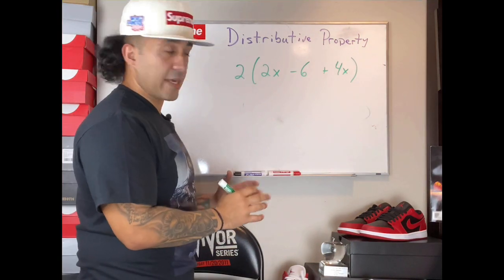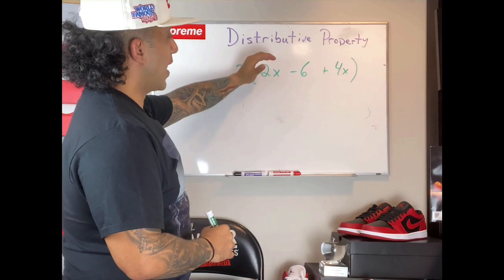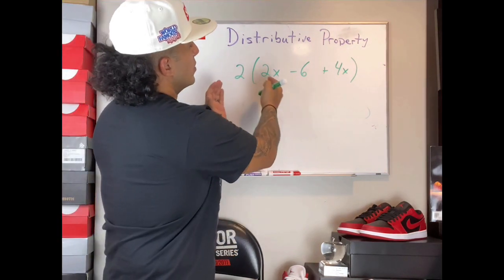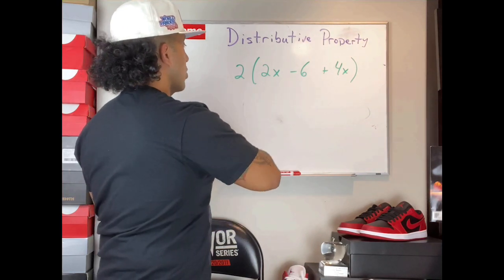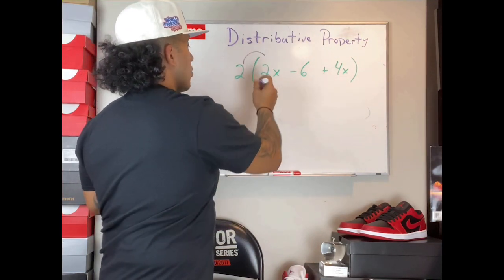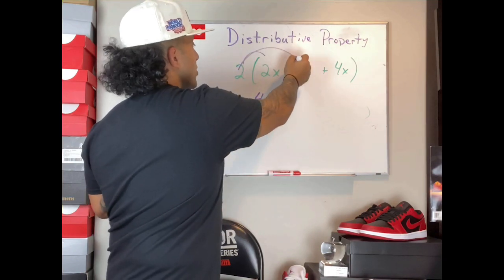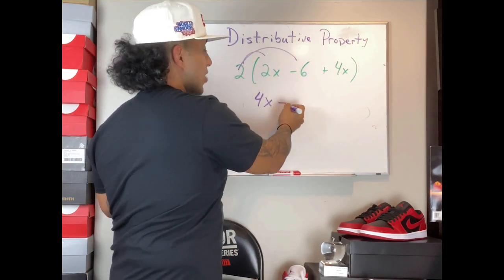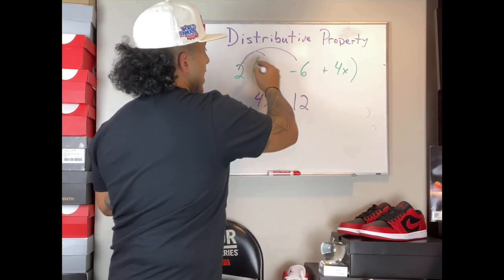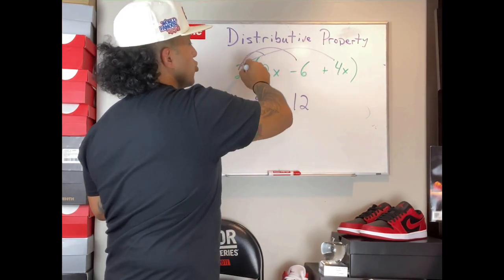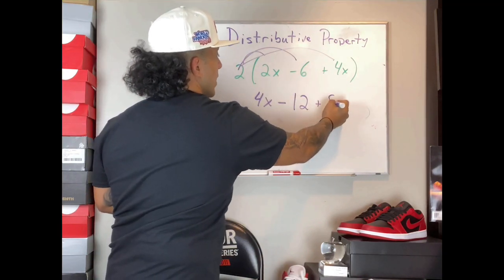So that's one way to do it. In this final example, we have the number two being multiplied by the terms inside the parentheses: two X minus six plus four X. We're going to start with two times two X, which gives us four X as our product. We're going to bring down the subtraction symbol, and two times six is 12. Last but not least, we're going to distribute the number two and multiply by four X, which gives us eight X.